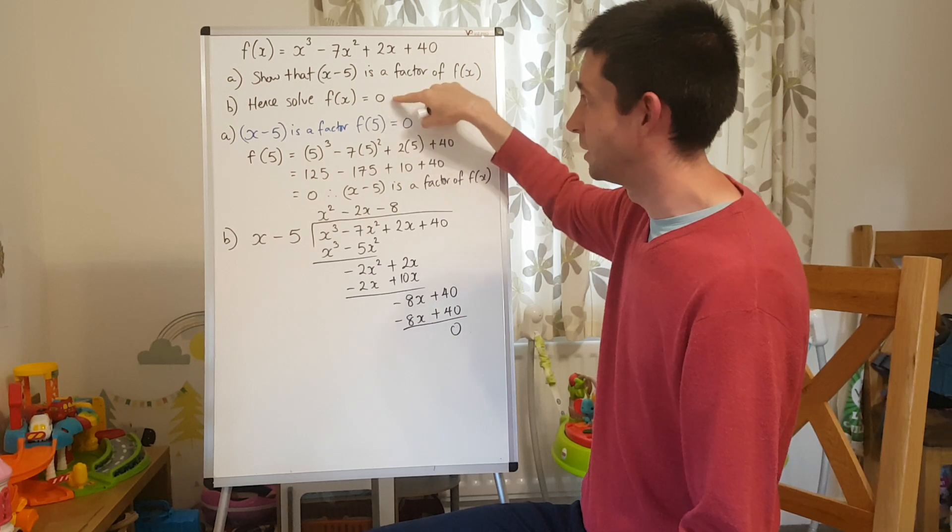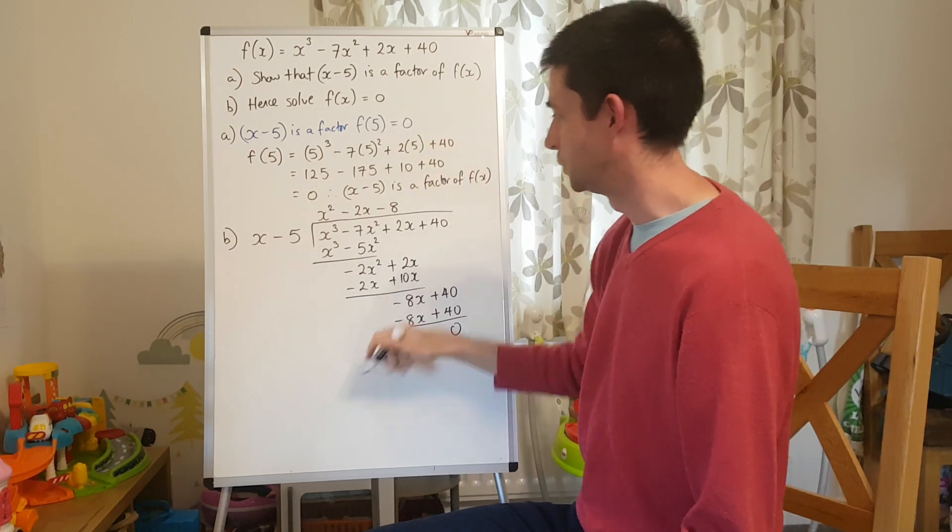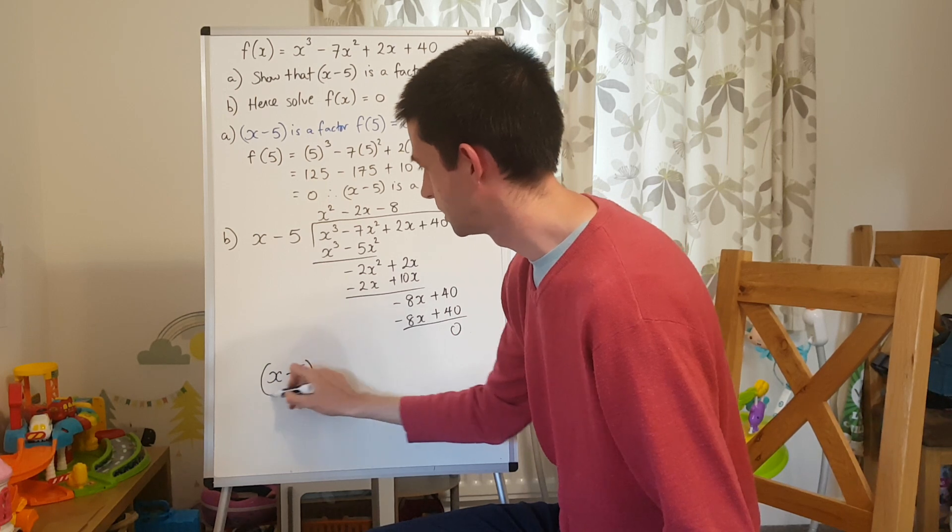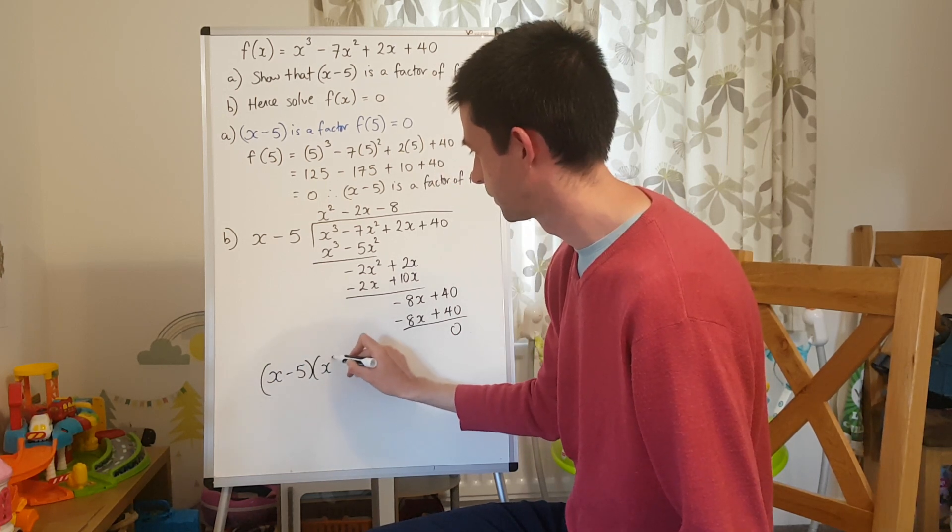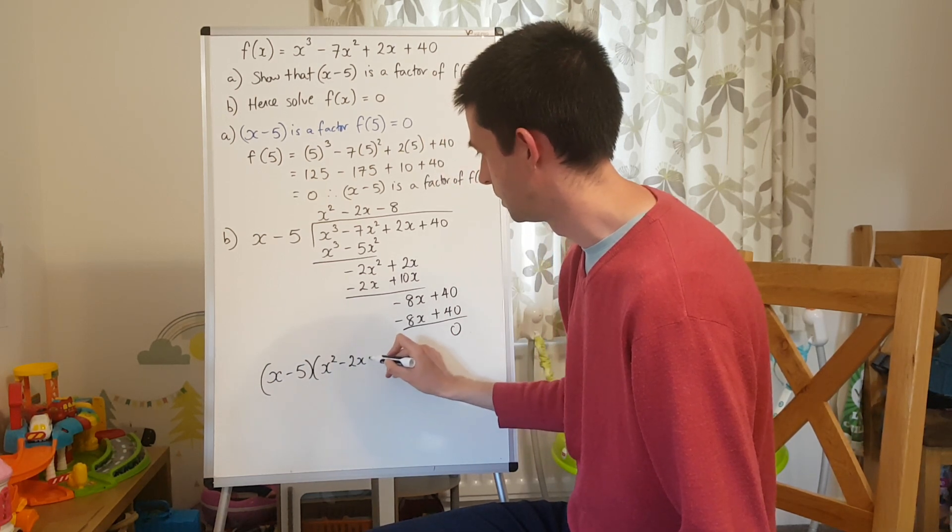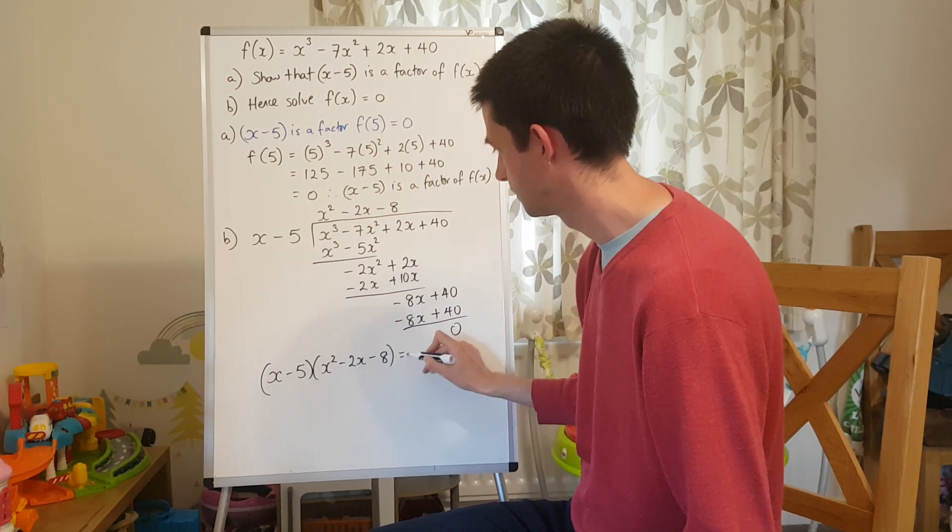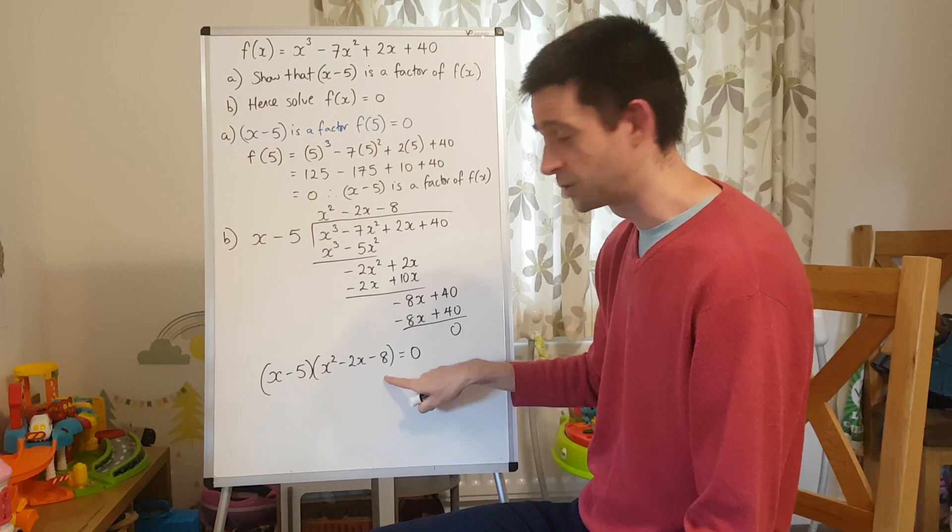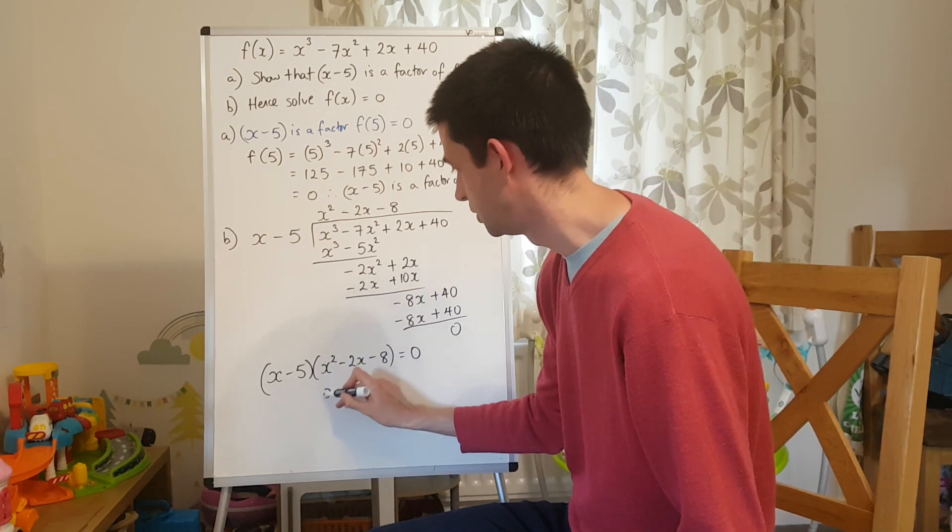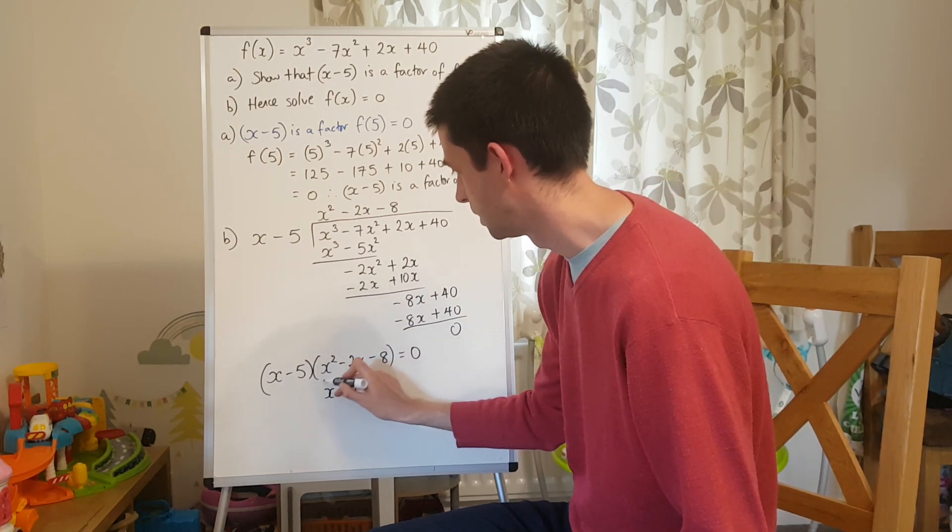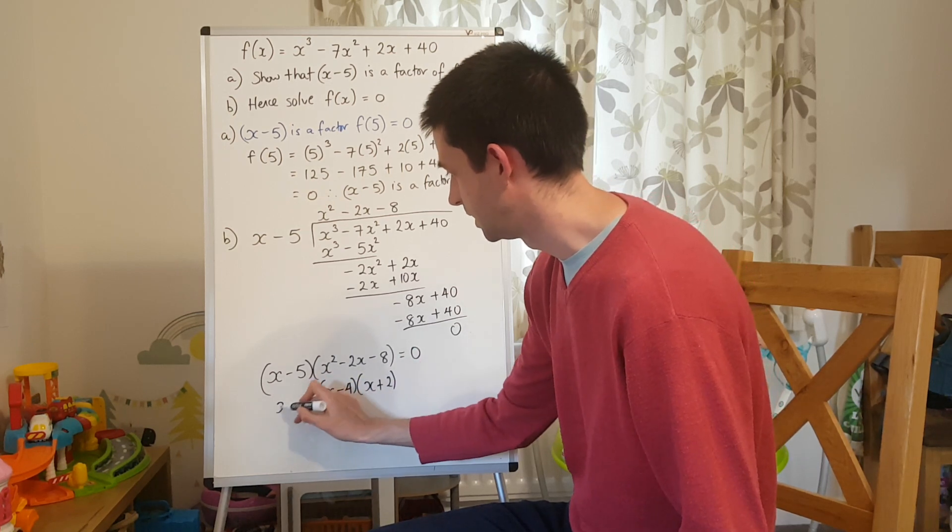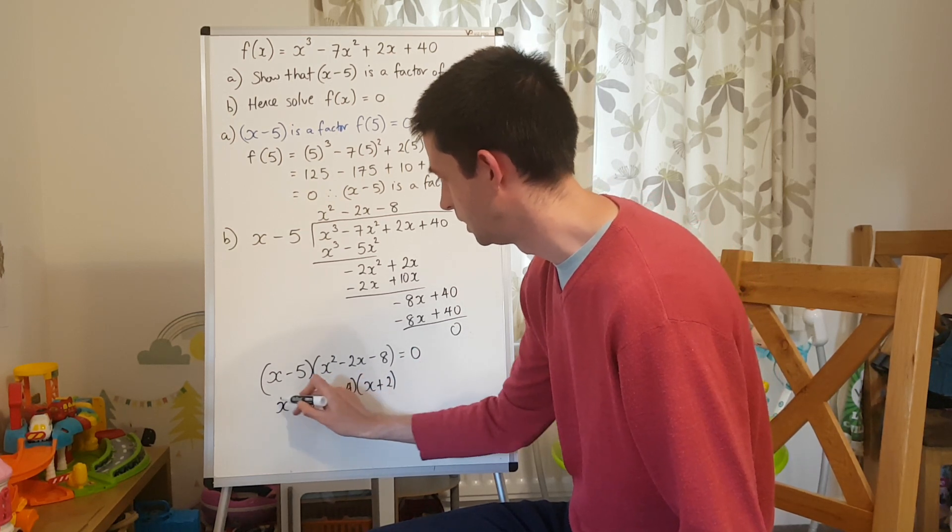The final thing that I've got to do to solve f of x equals 0 is I've got to say, OK, I can rewrite f of x as x minus 5 times by x squared minus 2x minus 8, which equals 0. I can now factorize this bit, the quadratic, into two brackets, so that's x minus 4, and x plus 2, not forgetting the x minus 5, which is already there.